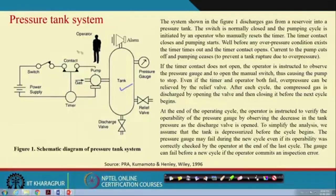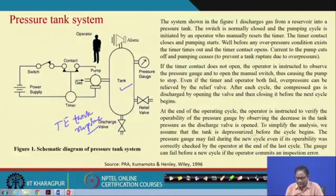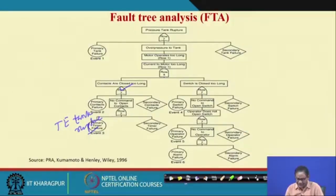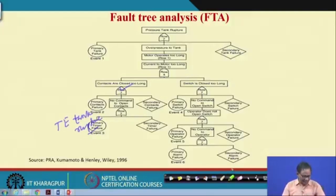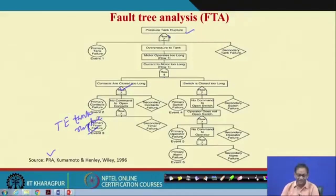As you know, there is a tank and a pumping system. We are interested to know the fault tree analysis of this system, where the top event is tank rupture. Pressure tank rupture is the system-level mishap or accident you do not want to take place. You want to know what are the reasons for pressure tank rupture and what are the basic events that alone or in combination contribute to pressure tank rupture.